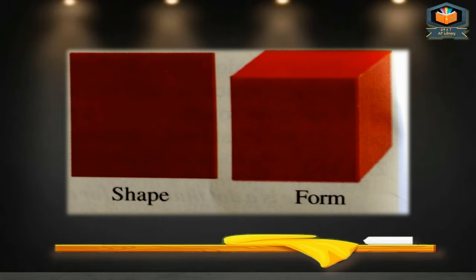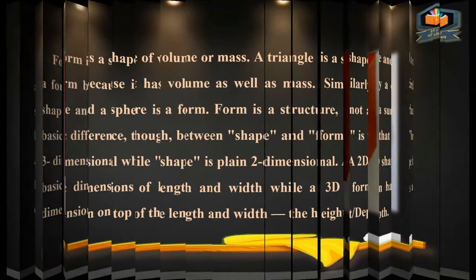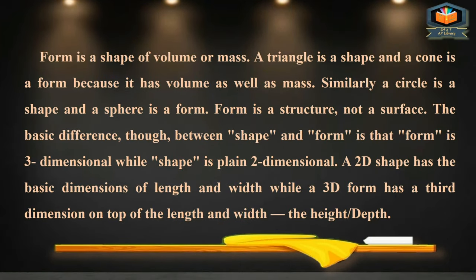Shape and form can be seen on screen. Shape can be in the form of a rectangle, square, or circle. Form can be in 3D form, like a cubic form. Form is a shape of volume or mass. A rectangle is a shape, and a cone is a form because it has volume as well as mass. A circle is a shape and a sphere is a form.